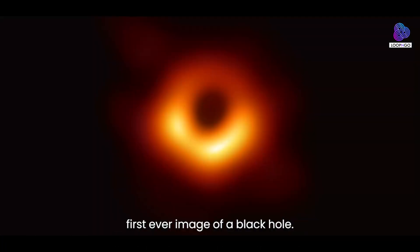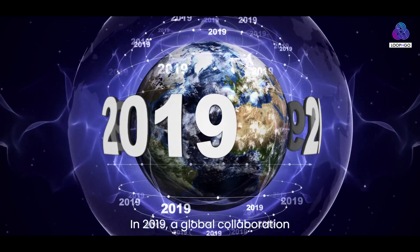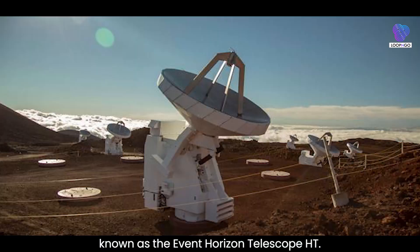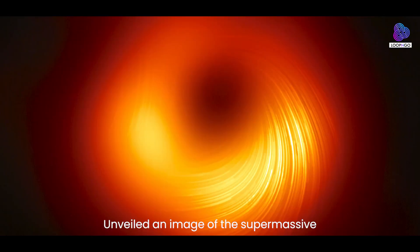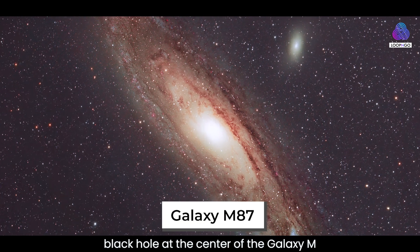The capture of the first-ever image of a black hole. In 2019, a global collaboration known as the Event Horizon Telescope, unveiled an image of the supermassive black hole at the center of the galaxy M87.